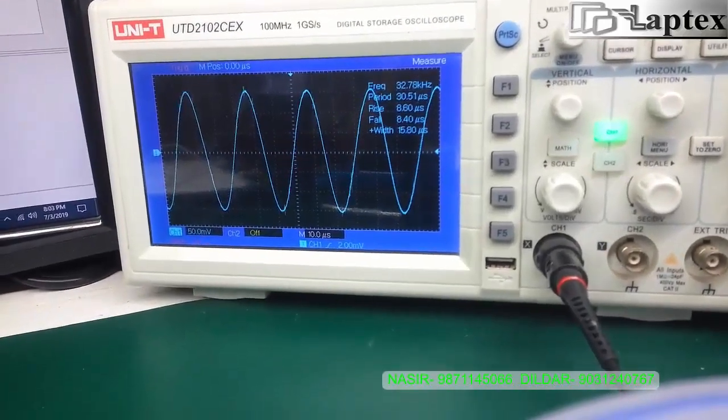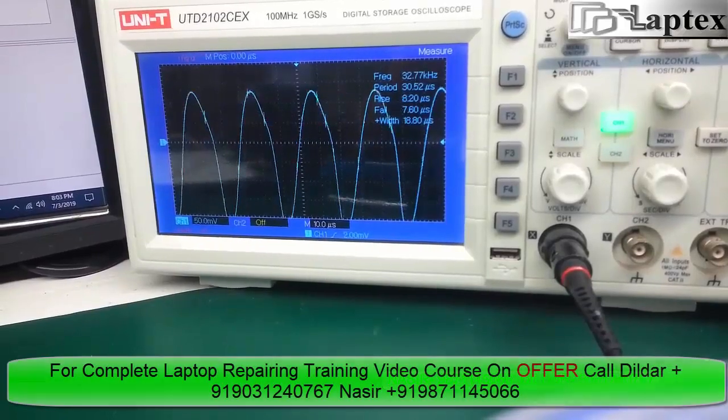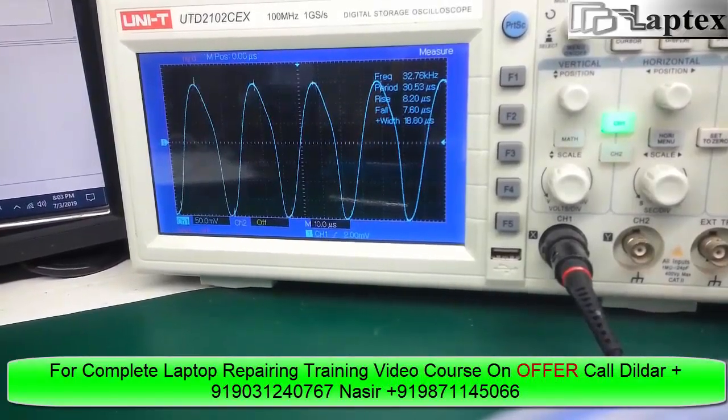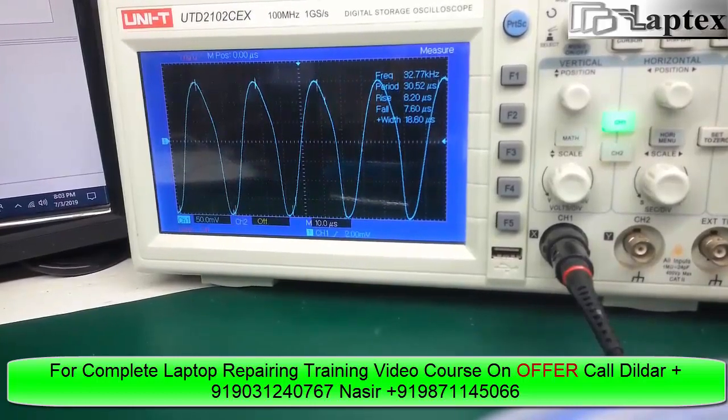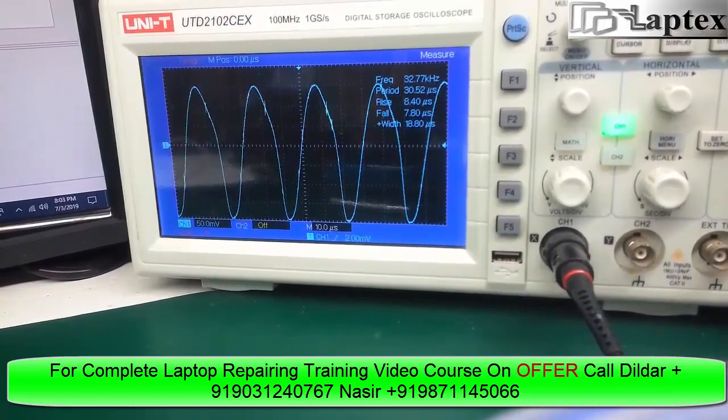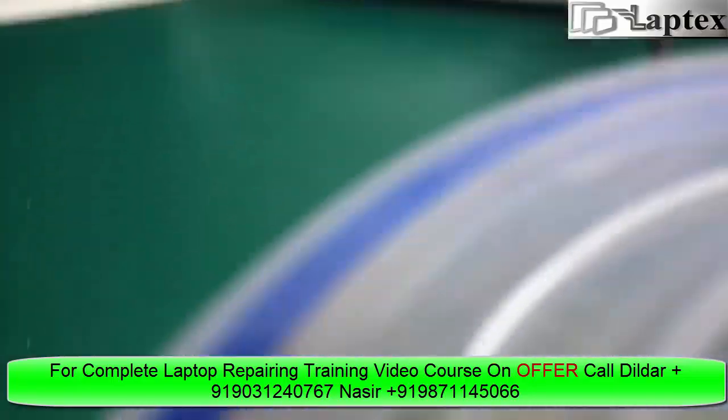And you can see from the measure button that in channel one frequency, you can see 32.78 kilohertz frequency showing on the screen. So the two settings that are required to be done: go to channel one, then go for the coupling from DC to AC, and change the acquire setting from sample to average.